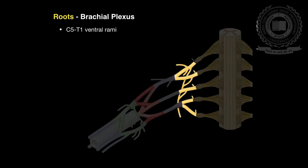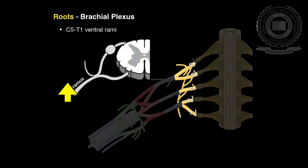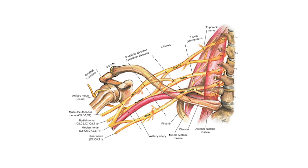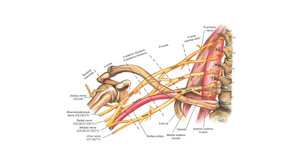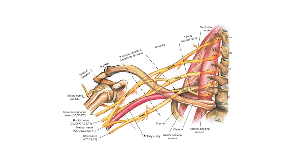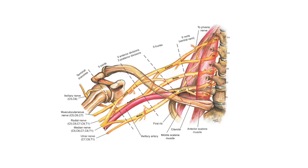The ventral rami of spinal nerves C5 to T1 are referred to as roots of the plexus. At each segmental level from C5 to T1, the dorsal root and the ventral root combine to form the trunk of the spinal nerve, which gives rise to dorsal and ventral rami. So the roots of the brachial plexus correspond to the ventral rami and not to the roots arising from the spinal cord. The spinal nerves that form the brachial plexus run in an inferior and anterior direction within the sulci formed by these structures.